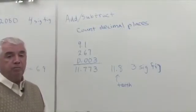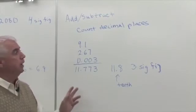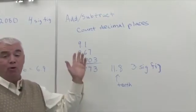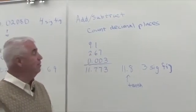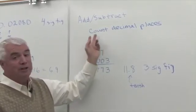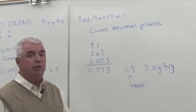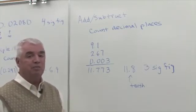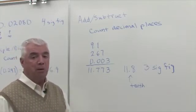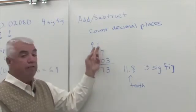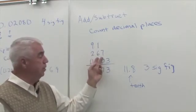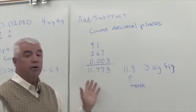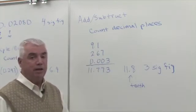When we add or subtract, that's a different operation, and so we have a different rule pertaining to significant figures. Here we count decimal places. Rather than counting significant figures, count decimal places. And the least number of decimal places wins. So I have a number expressed to the tenth, the hundredth, and the thousandth. My answer can only be expressed to the tenth.